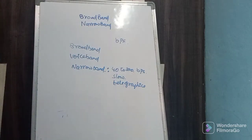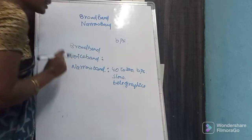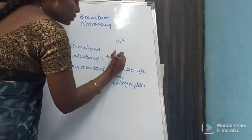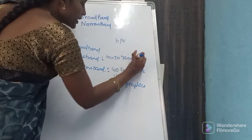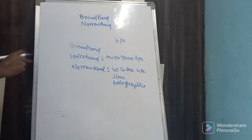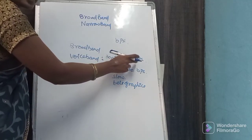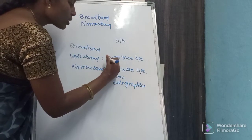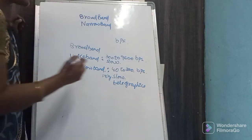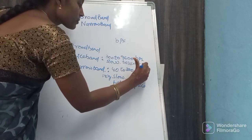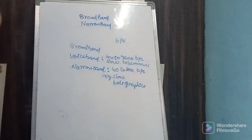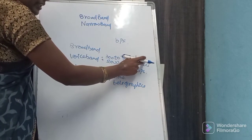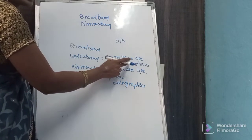Next is voice band. This voice band is somewhat better compared to narrow band. It can transfer 300 to 9600 bits per second. It works very slowly and it is useful in telecommunications. As the name itself — voice — indicates we are communicating.